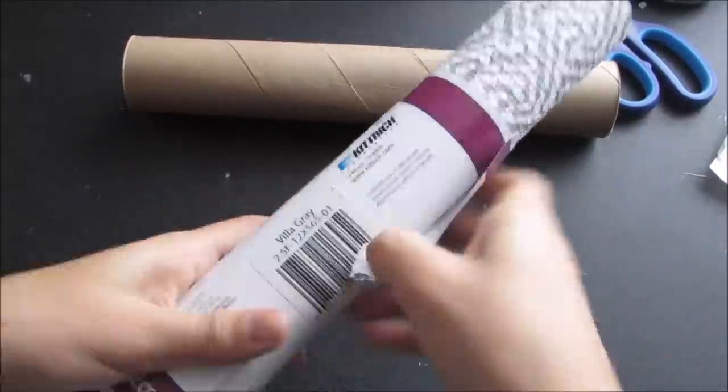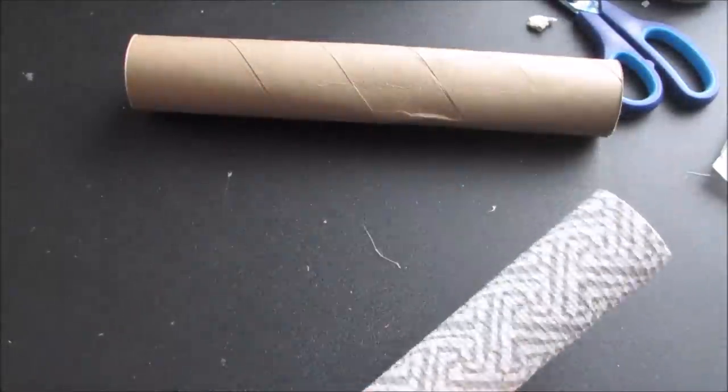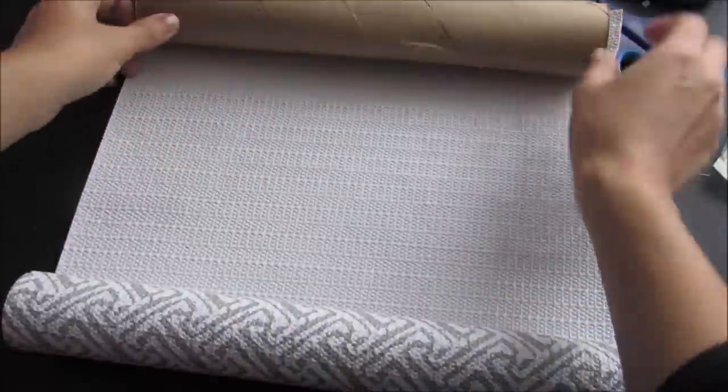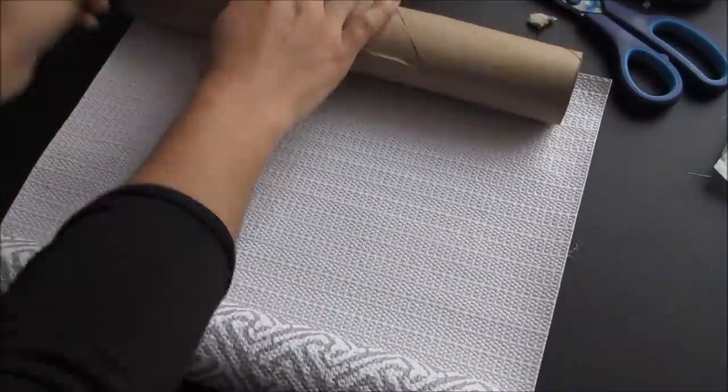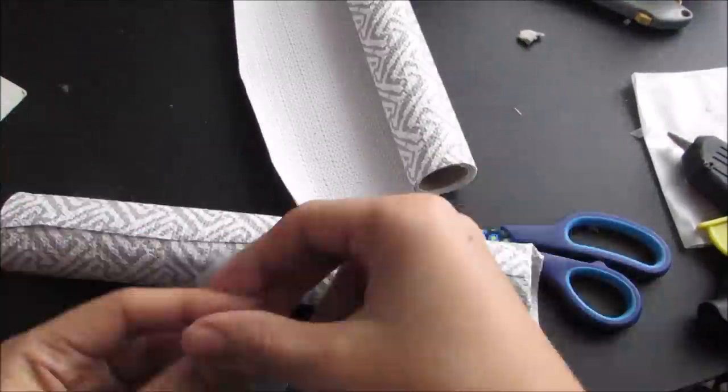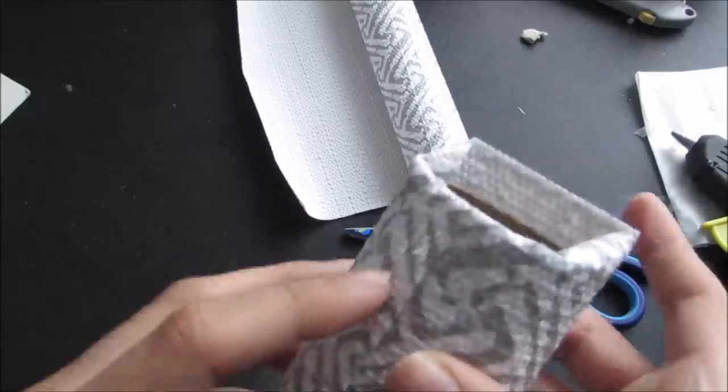For covering the paper towel roll I just took this fabric and pretty much did the same thing I did to the dowel. Yes it is a vinyl top liner used for kitchen drawers. I glued it and just kept rolling it. To tuck it into the roll I just folded it over and taped it down and it looks really good.